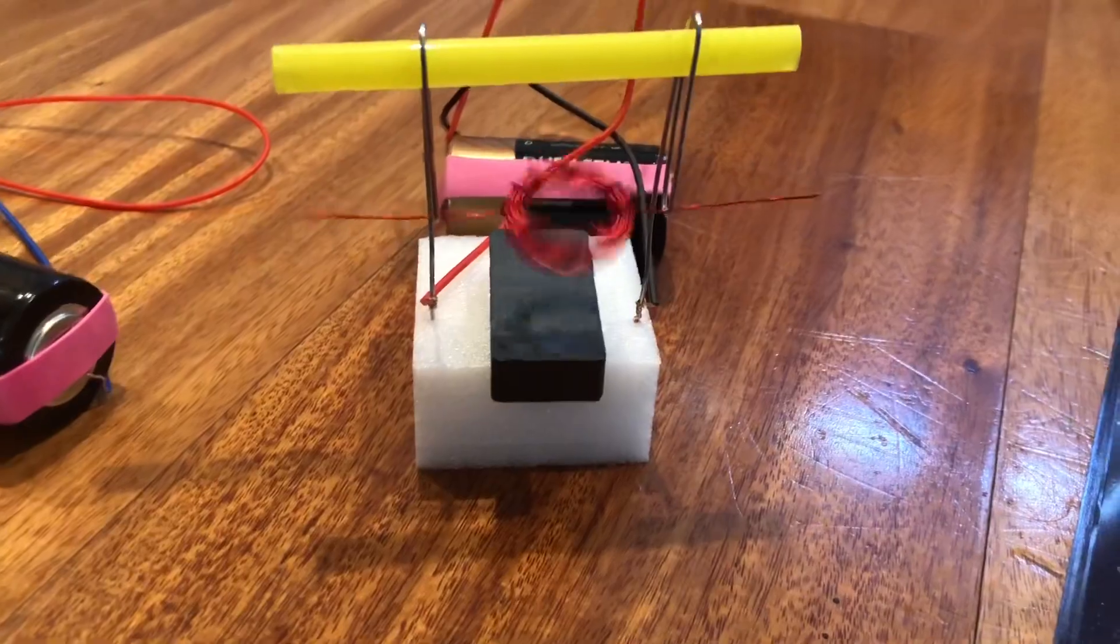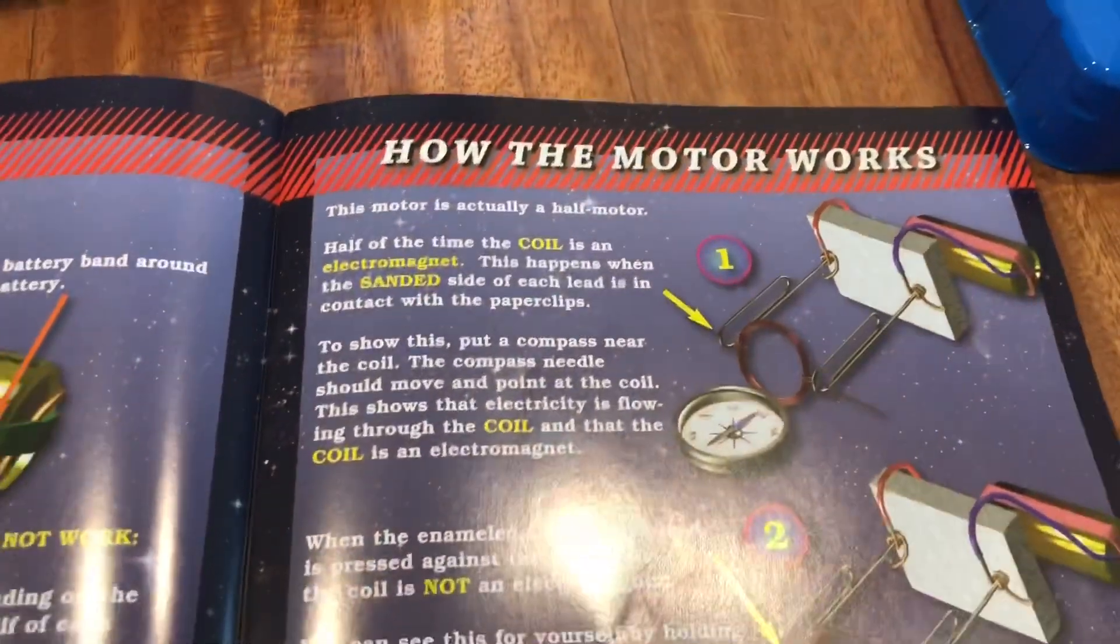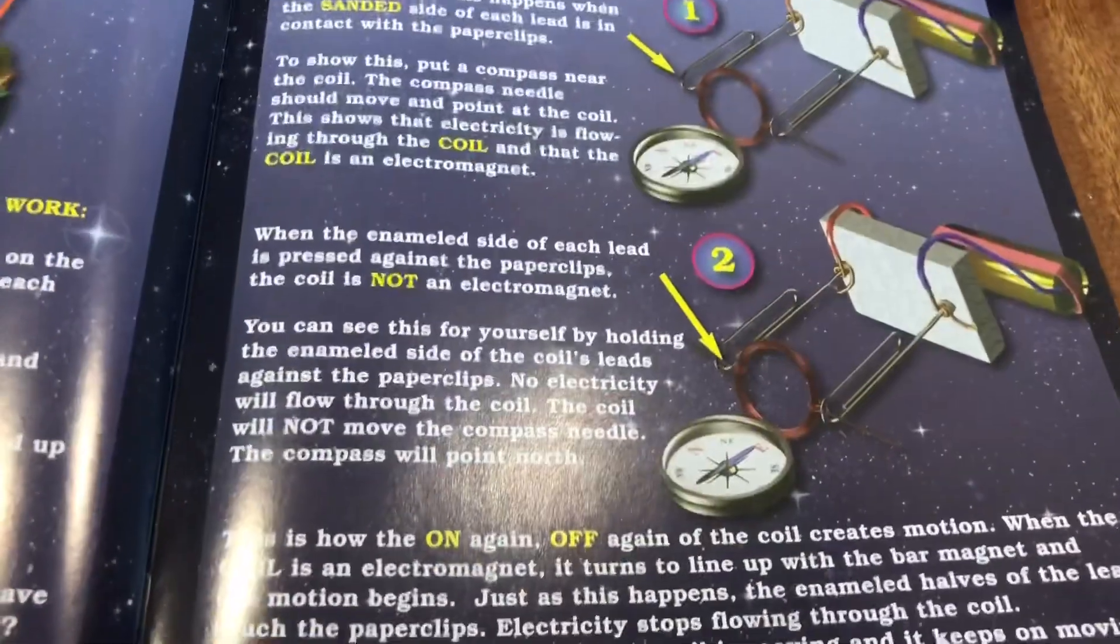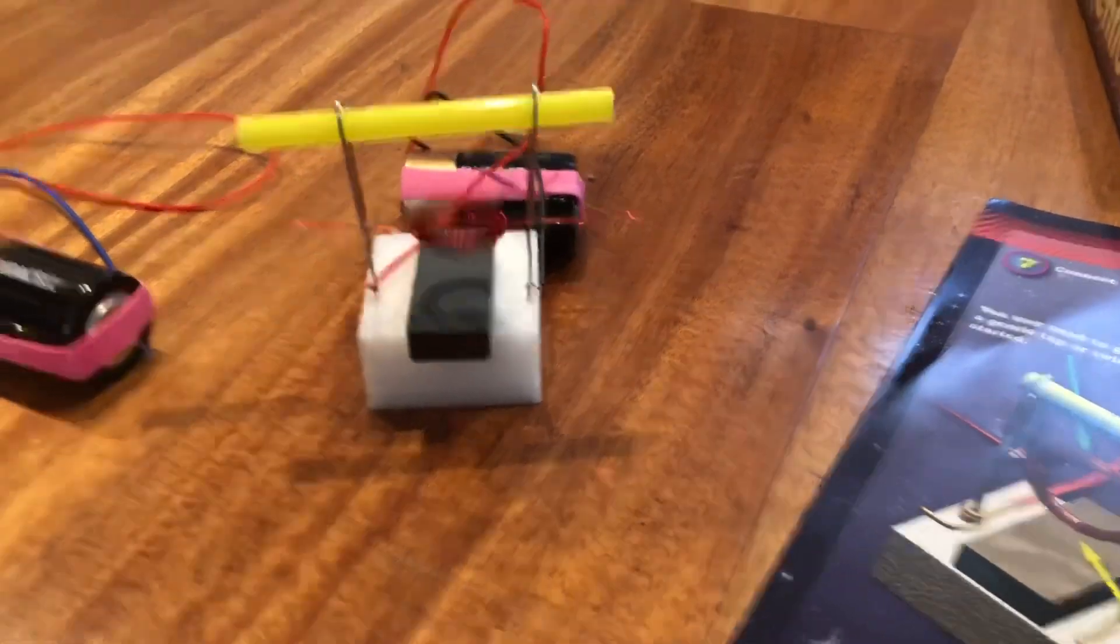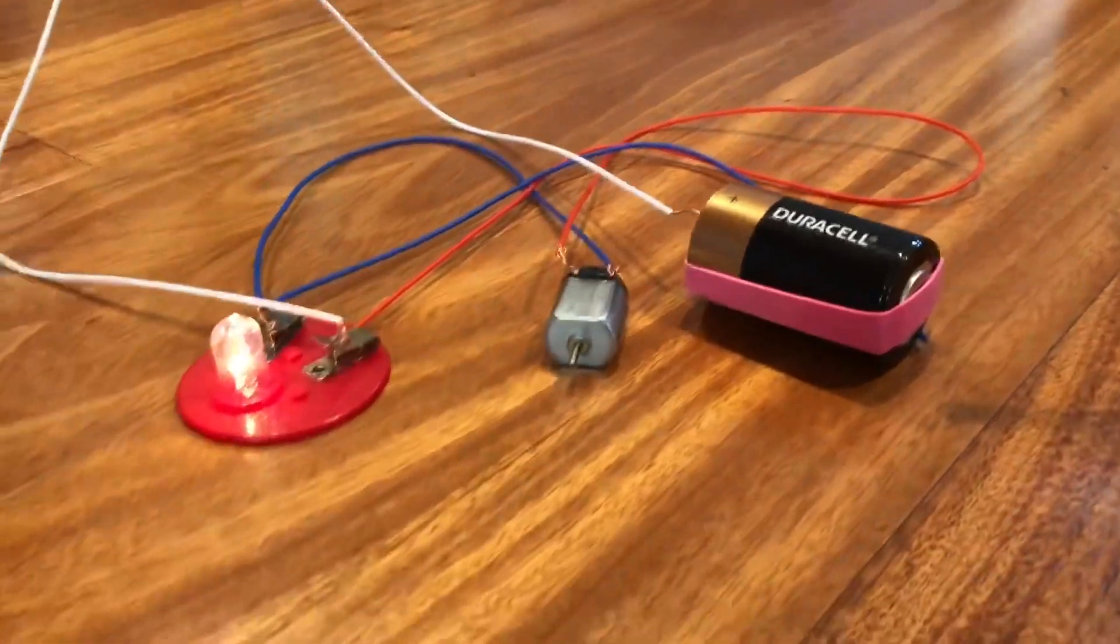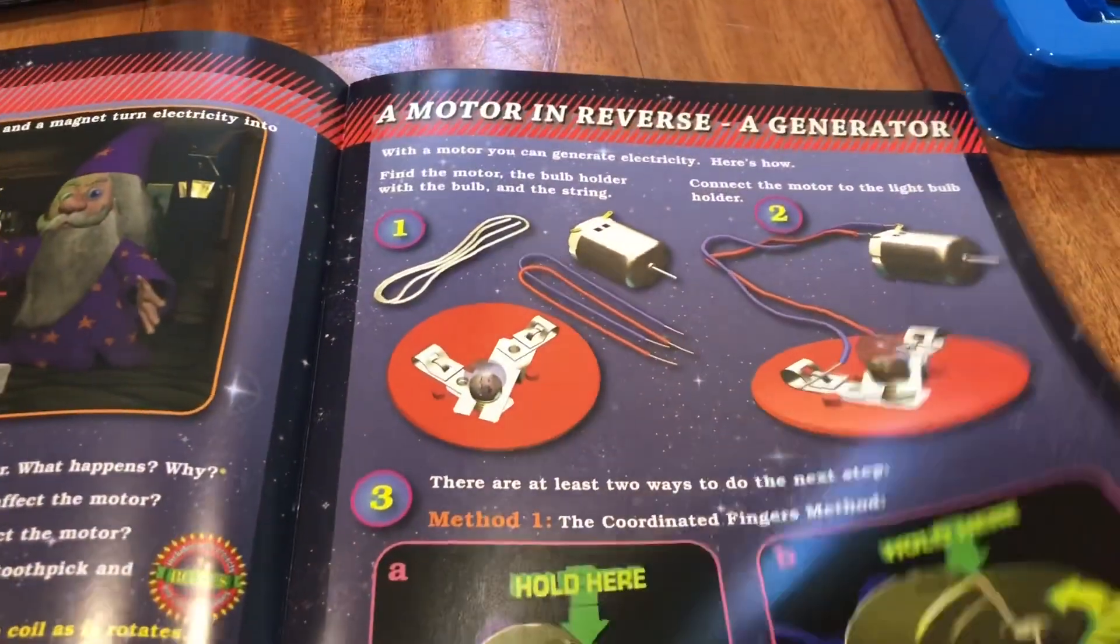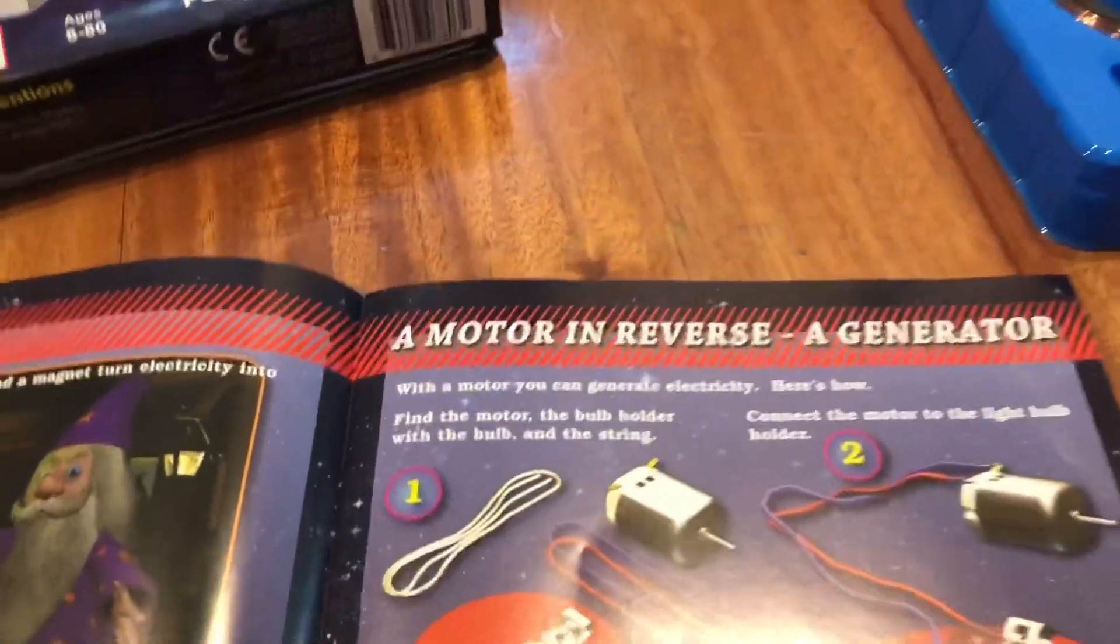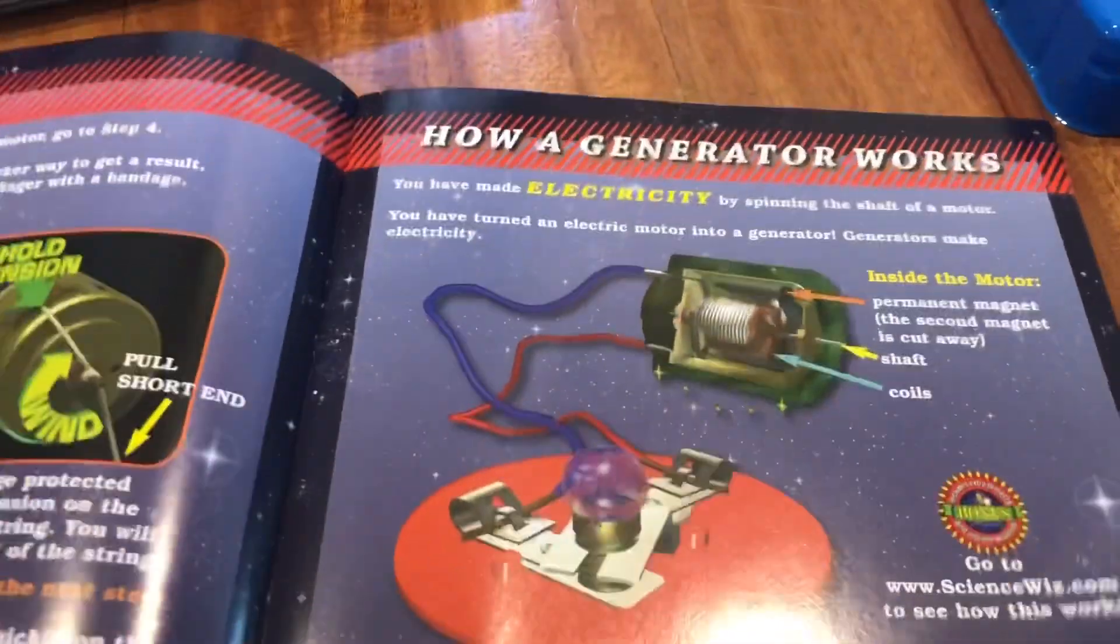But here's what's really nice: after you make the motor and get it up and going, they do a nice job of explaining how the motor works and why it's spinning. That is the part that really makes me happy. How come if I take one of those wires off the circuit, then the motor stops working and the light stops working? They tell you all of these important things. How come a motor, when it goes in reverse, is a generator? What does that mean? How does it work? Very cool.